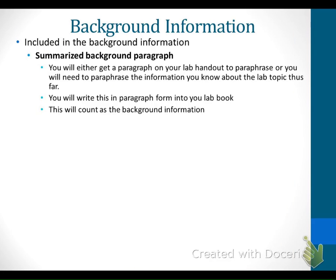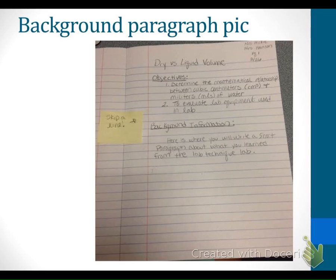The next section is the background information. There are three parts to the background section. The first is a summarized background paragraph. You'll either get a background paragraph in your lab handout to summarize, or you'll get directions on what to write. Here's an example showing a skipped line and a new header. Please take a moment and follow the directions in your dry versus liquid volume lab about writing what you learned from the lab technique lab — that will count as your background paragraph for this lab.